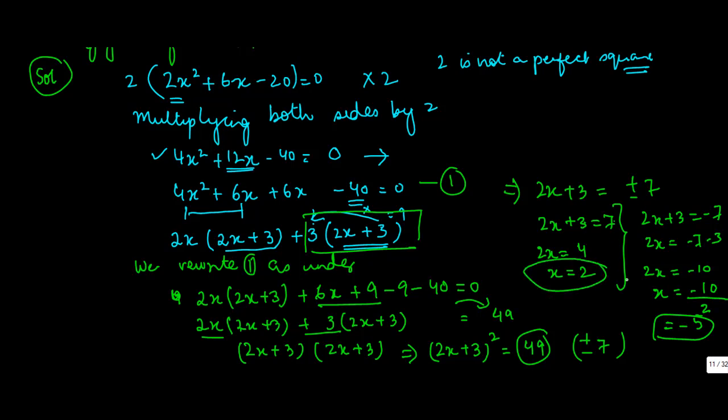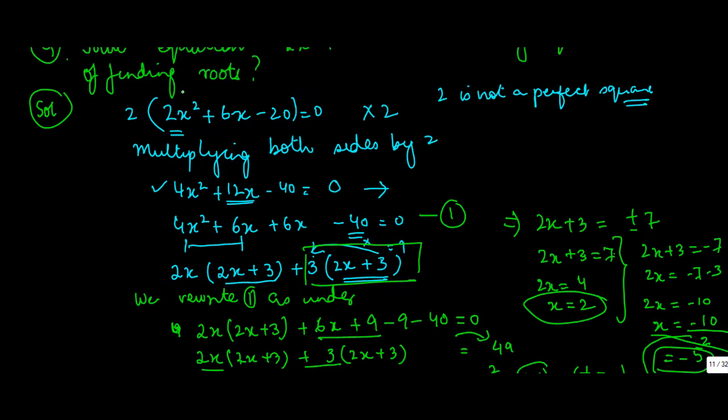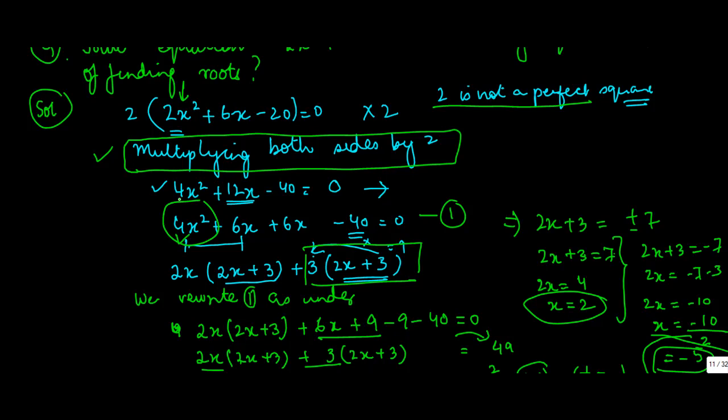So we've got two values of x. The only different catch here was that because the coefficient of x² was not a perfect square, you multiplied the entire equation both sides by 2. This is the first step. You have to convert this equation into the form (a + b)², which is a² + b² + 2ab. So the first coefficient which is there for x² has to be a perfect square, and if it is not, you have to first make it.